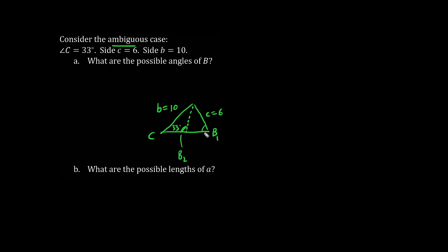So let's solve this. First, when looking at the larger triangle, we have an acute B1. Let's play catch. We have sine B over 10 equals sine of C, which is 33 degrees, divided by 6. Multiplying both sides by 10, we have sine B equals 10 times sine 33 over 6. Hitting sine inverse, we get B is approximately 65.2 degrees.